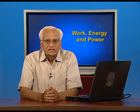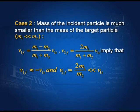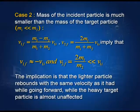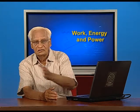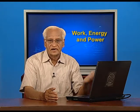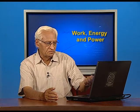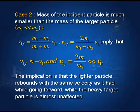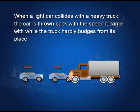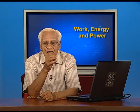Case 2: the mass of the incident particle is much smaller than the mass of the target — a light particle hitting a heavy particle. In this case v₁f = −v₁ᵢ: the light particle bounces back with the same speed it came with, while the target's velocity is very small — it hardly moves. In a collision of a very light car with a heavy truck, the car moves back with the speed at which it came, whereas the truck hardly moves.